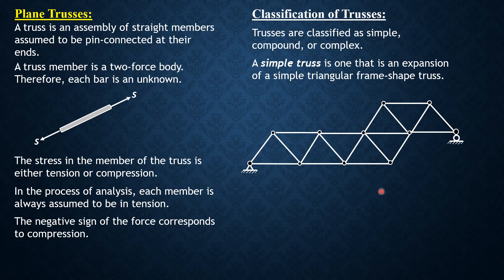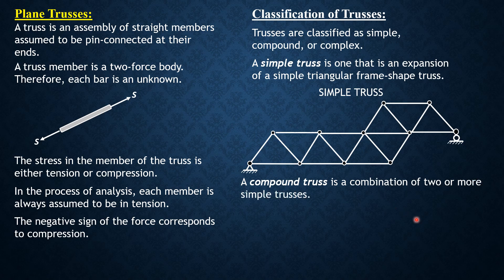When two or more simple trusses are joined together by joining them to their common joint and adding one additional bar, or joining them with three joints and adding three members, then the truss is called compound. It is a combination of two or more simple trusses.